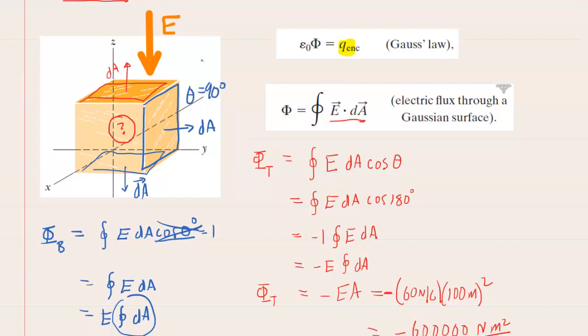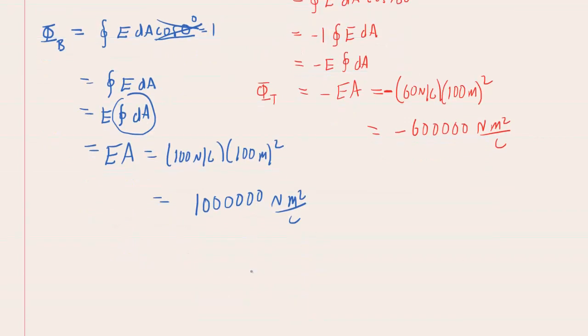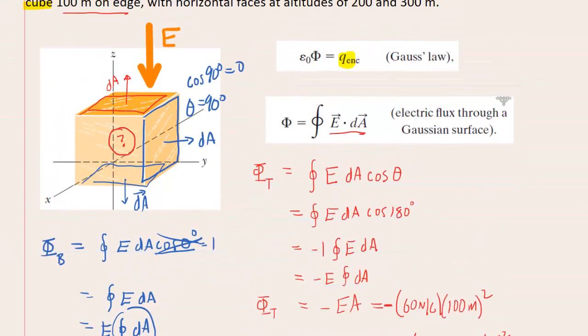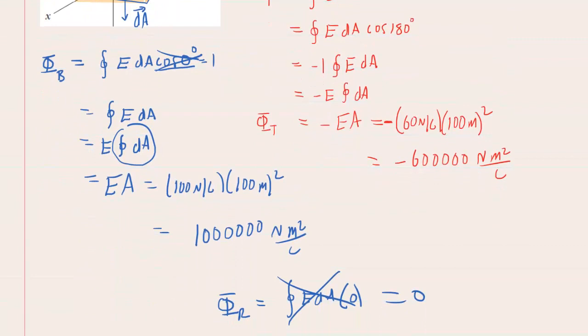We recall that the cosine of 90 degrees is equal to zero. So if we were to set up an electric flux equation for the right side, we would have an integral of E dA times the cosine of zero, which is zero. The whole thing would just go to zero. So there is no flux on the right side. For similar reasons, the left side, front side, and back side will also have zero flux because their angles are all 90 degrees between the electric field and the area vector dA. So there's only two fluxes to kind of worry about here.